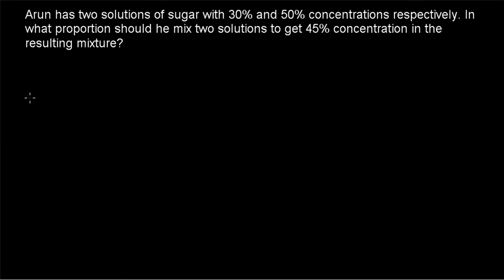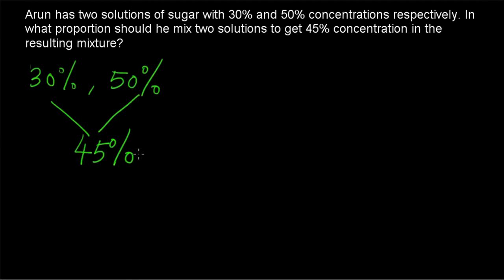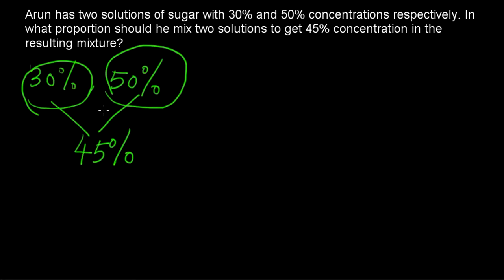Let's analyze the question carefully. He has two sugar solutions — one with 30% sugar and the second with 50% sugar. These two are mixed together in order to form a 45% sugar solution. So how much of the 30% solution and how much of the 50% solution should be taken and mixed so that the resultant has 45% sugar? That's the question.